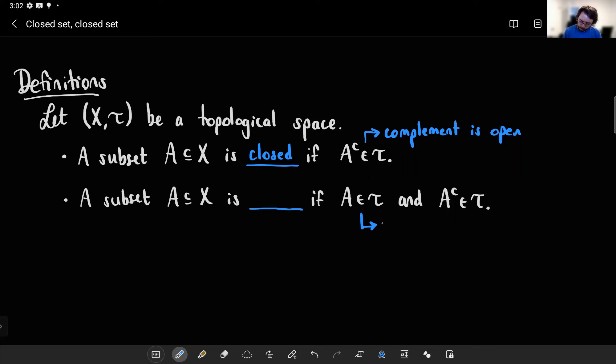We have a word for that. So this means A is open, this means A is closed. So if you're both open and closed, we like to say you're clopen. But it could also happen that you're neither open nor closed.